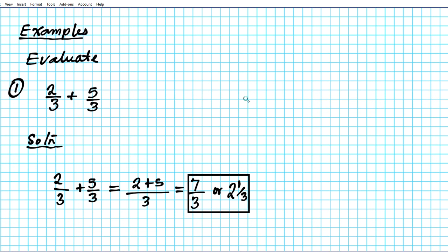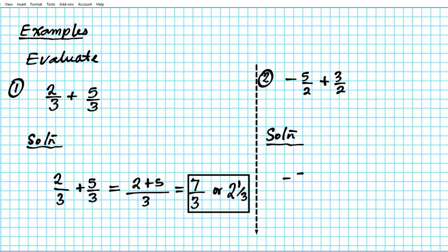Now let's try another example — question two. What if we have to evaluate negative five over two plus three over two? The solution: looking at the forms, we have two improper fractions which is fine. We only have problems when we have mixed numbers or whole numbers. So we simply add the numerators: negative five plus three, divided by the denominator two, keeping the denominator.